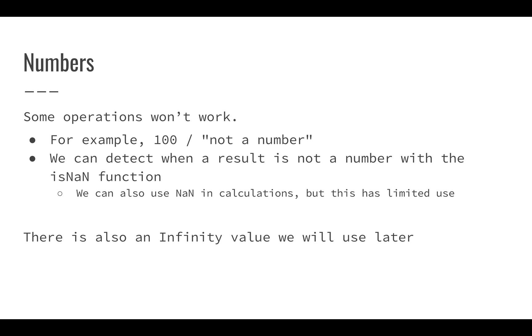With numbers, we'll look at a few things we can do. Some operations just won't work. For example, if I divide 100 by a string, it won't give me an error, but it won't give me a normal number. It's going to give me this odd value called NaN, which is not a number. We can detect if something is not a number with isNaN. We'll get into how we can use that more later. There's also an infinity value we can use if you divide a number by zero. That gives you infinity, and we can use that later as well.